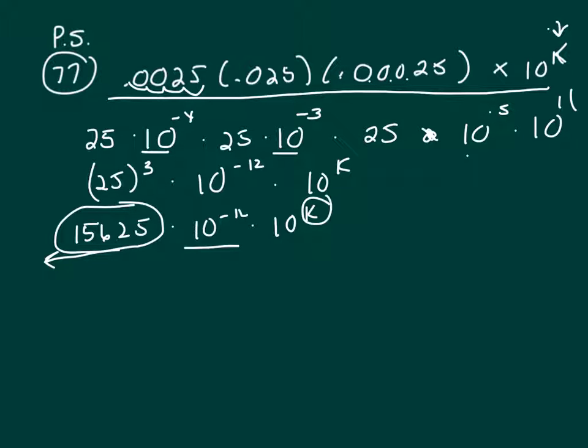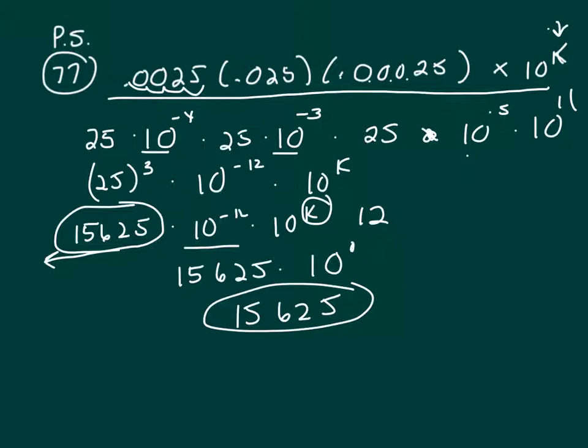So what does this need to be? It needs to be 12, because when you multiply like bases you add your exponents, and that would give you 10 to the 0. So you're left with 15,625, or 25 to the 3rd power. So 12 is your answer.